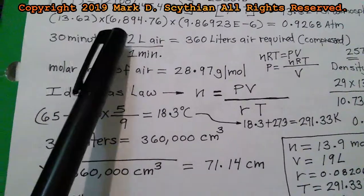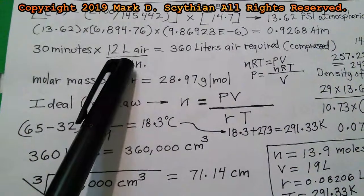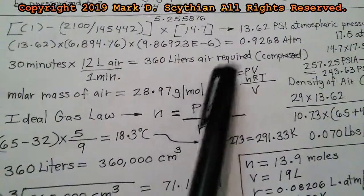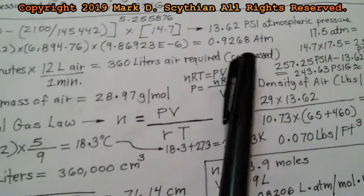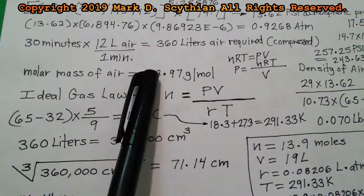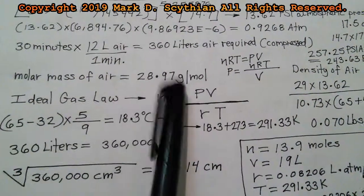We need 12 liters of air per 1 minute times 30 minutes. 360 liters of air are required above atmospheric pressure or compressed air. We know the molar mass of air is almost 29 grams per mole, 28.97.